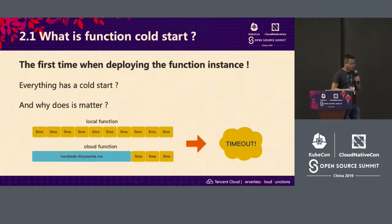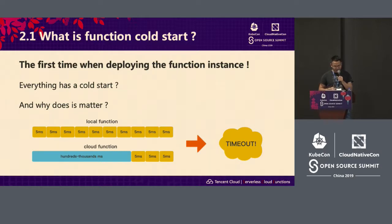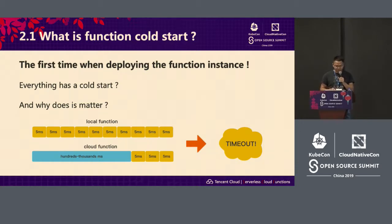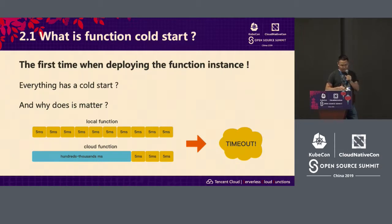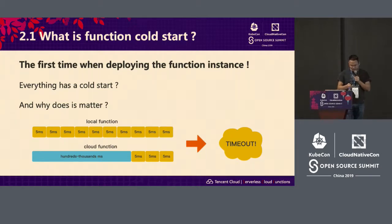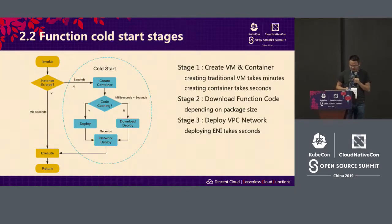I spend a lot of time and effort optimizing cold start. Developers have different expectations — it's different from the local function scenario. For local functions there's no notable cold start overhead, but for cloud functions there is preparation work the first time, ranging from hundreds of milliseconds to several seconds. For time-sensitive businesses, this cold start timeout is a real problem. The system is elastic: when concurrency rises, resources are provisioned; when it declines, resources are released, which has a big impact on businesses.